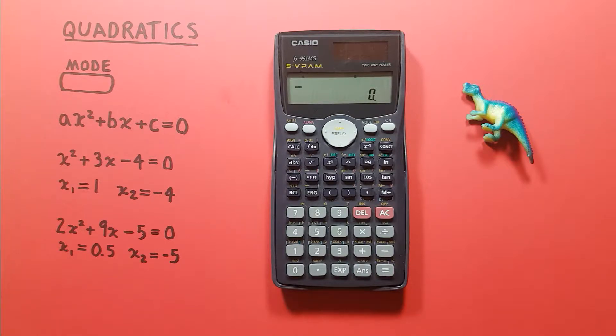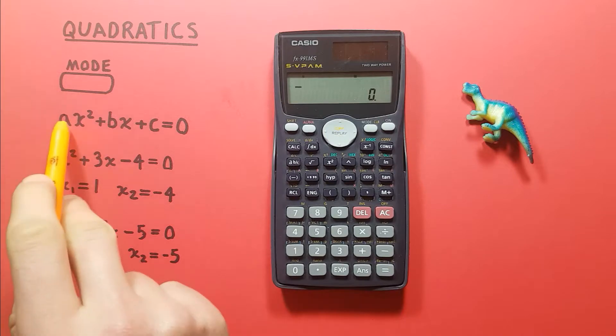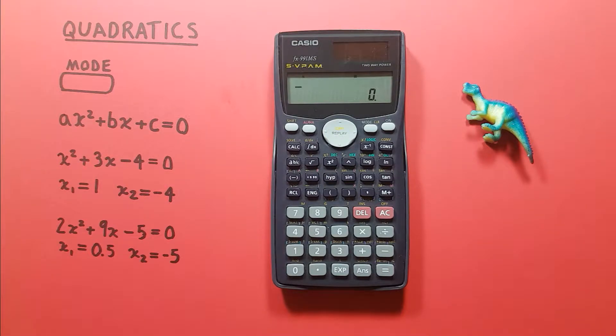So a quadratic equation is an equation that looks like this, where the A, B, C represent known values and the X's represent unknown values that we're trying to solve. There can be at most two possible solutions for these X's.